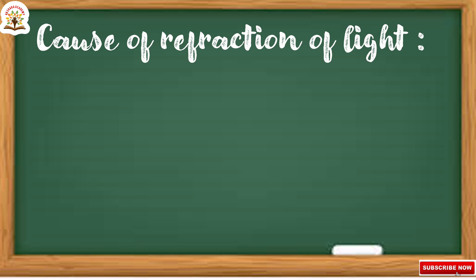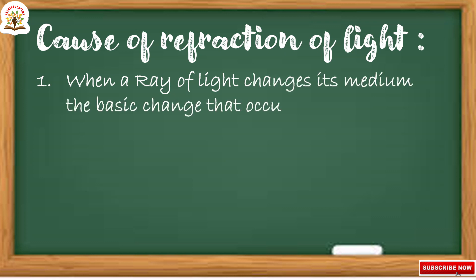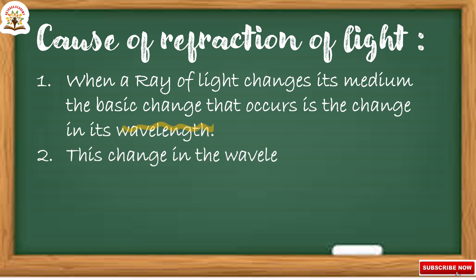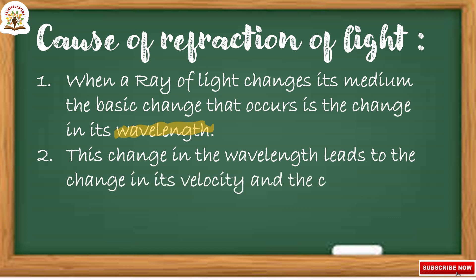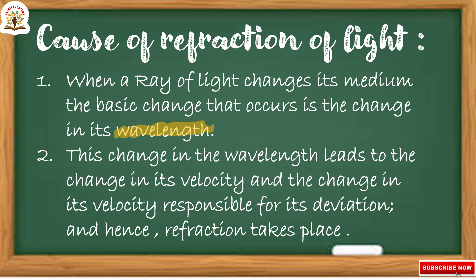Now we discuss the causes of refraction of light. When a ray of light changes its medium, the basic change that occurs is the change in its wavelength. This change in wavelength leads to a change in its velocity, and the change in velocity is responsible for its deviation — and hence refraction takes place.